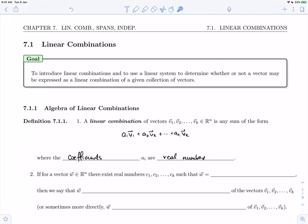Number 2 says: if for a vector w there are real numbers c1 through ck such that w can be expressed as c1 times v1 plus all the way up to ck times vk...